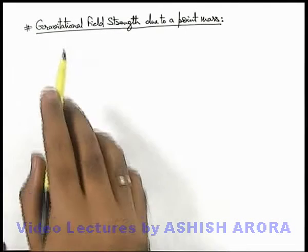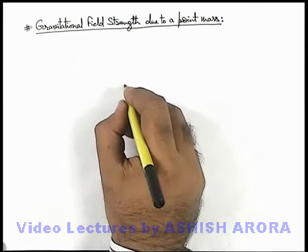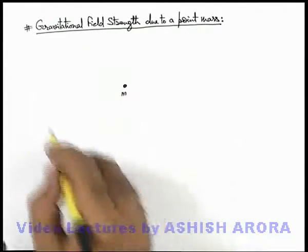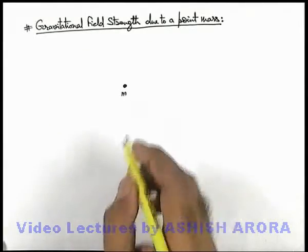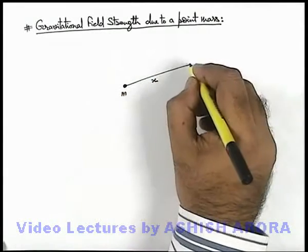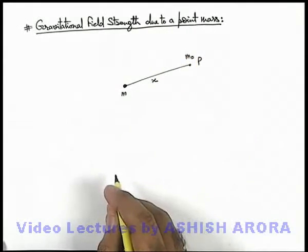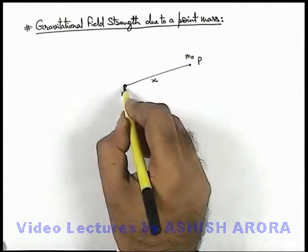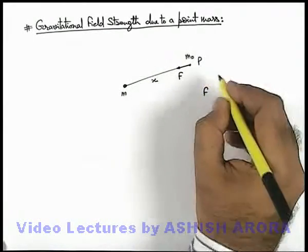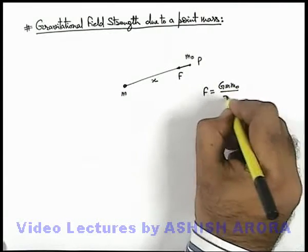Let us calculate gravitational field strength due to a point mass. Say we are having a point mass m. As we already studied, in its surrounding region there exists a gravitational field. Now in this situation, at a distance x from the point mass, if we are having a point P and we place a test mass m₀ over here, this mass m will exert a force F according to Newton's law of gravitation on m₀, which can be given as G·m·m₀ divided by x squared.